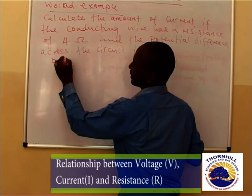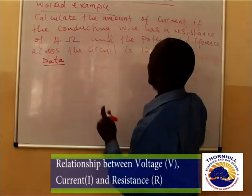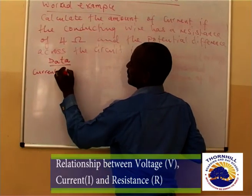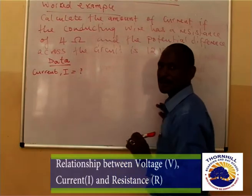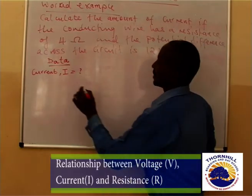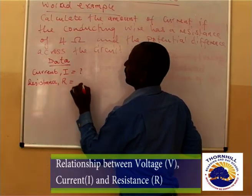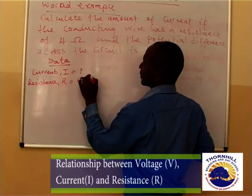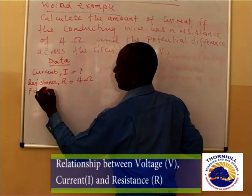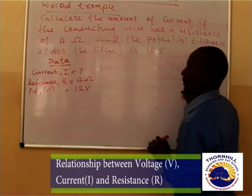You begin by collecting the data. What are you given in this question? They say calculate the amount of current — so you know current, capital I, is what we don't know. They want us to find the amount of current. Then they give resistance, capital R, as 4 ohms. And the potential difference, which is PD or volts, is 12.